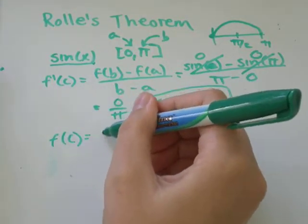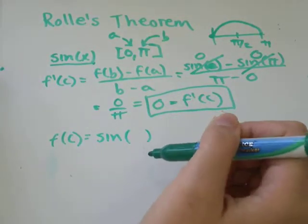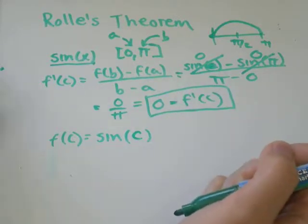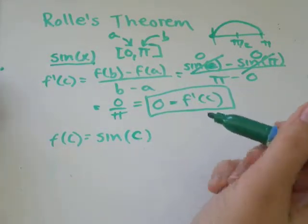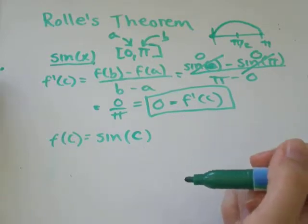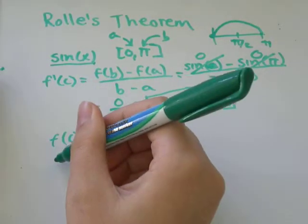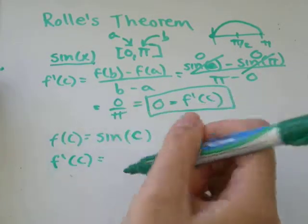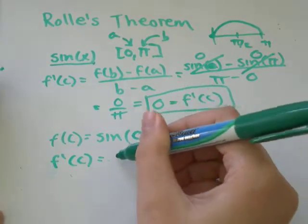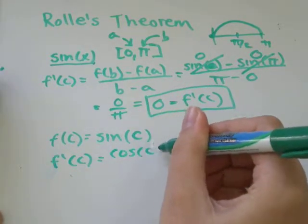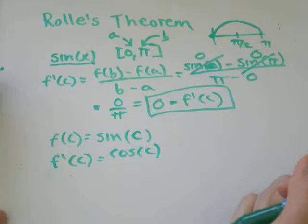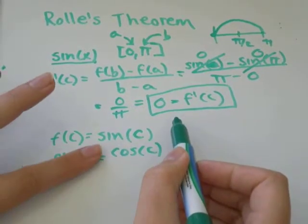f of c equals sin, instead of using the variable x, just change it to the variable c. And then we'll take the derivative of that. So f prime of c would equal the derivative of sin is cos of c. We know f prime of c is equal to zero.